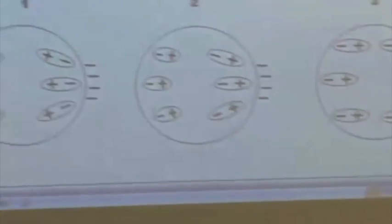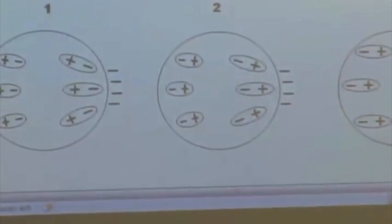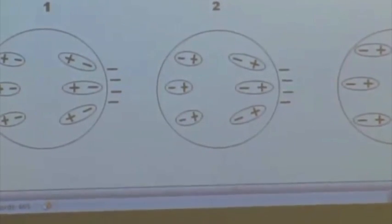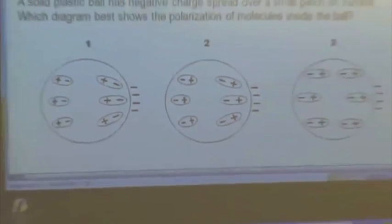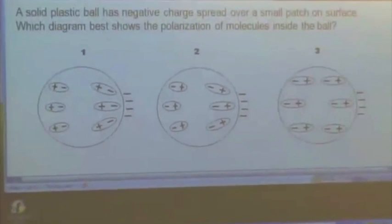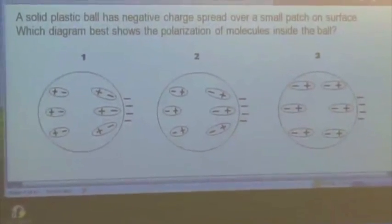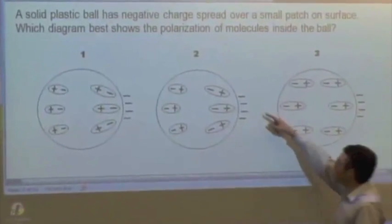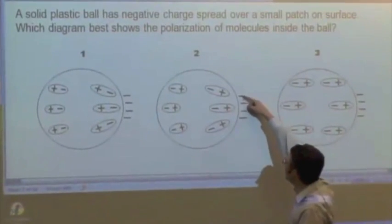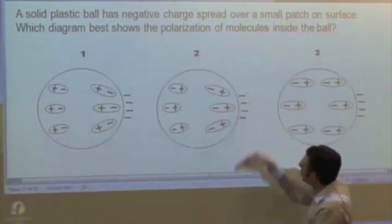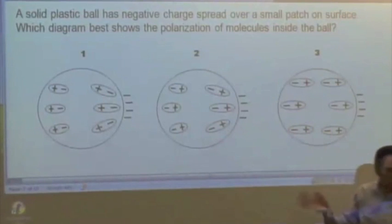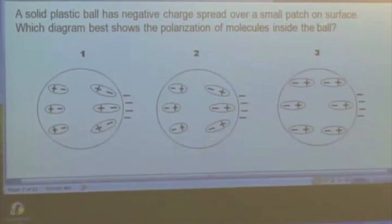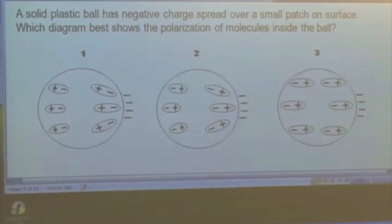Let's try an insulator instead. Here's a solid plastic ball. It has a negative charge spread over just a small patch. For an insulator, that's OK — we can place a little tiny bit of charge on one part and it won't tend to spread over the entire object.